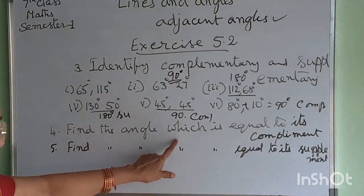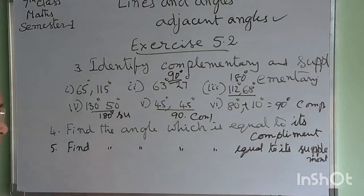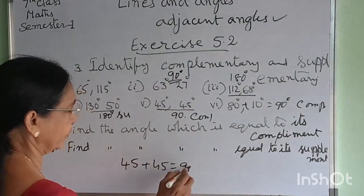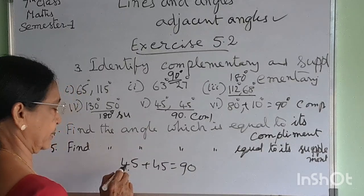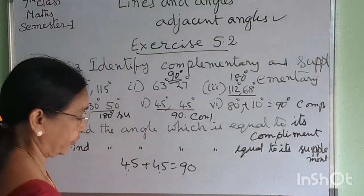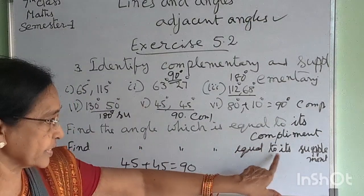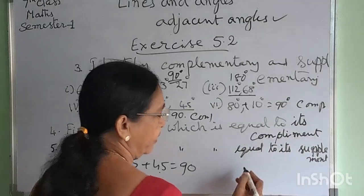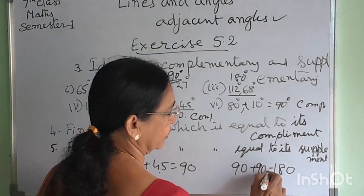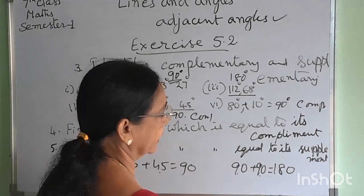Next, find the angle which is equal to its complement. Then, find the angle which is equal to its supplement. The sum of two supplementary angles is 180 degrees, so 90 plus 90 equals 180. The angle which is equal to its supplement is 90 degrees.